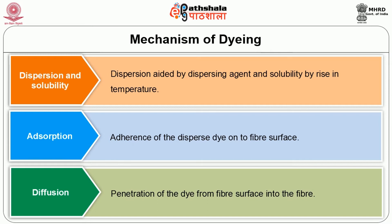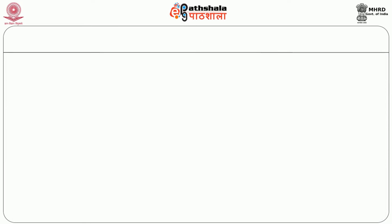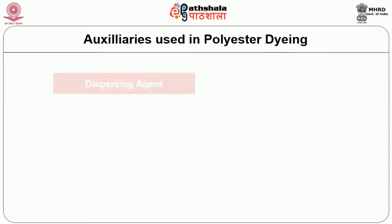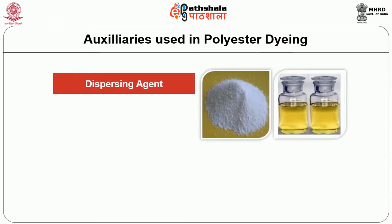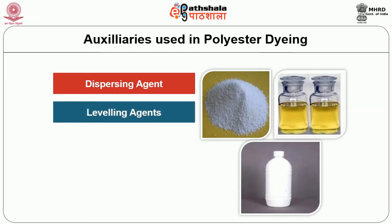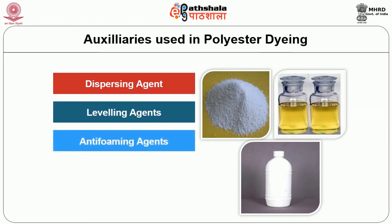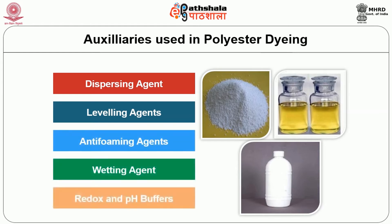After diffusion, an after treatment is given — particularly for polyester dyeing — called reduction clearing, where dispersed dye on the fibre surface is removed. Auxiliaries used in polyester dyeing include dispersing agents such as sodium oleate, castor oil, and ethylene oxide condensate. Levelling agents (carriers) like phenyl, penylofenyl, and metaprozole are also used — these carriers swell the fibre so dispersed dye can adhere evenly. Anti-foaming agents, wetting agents, and redox and pH buffers are also used.